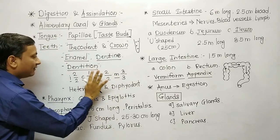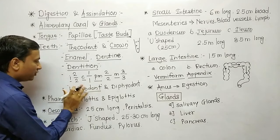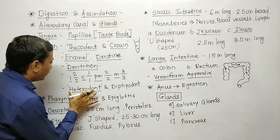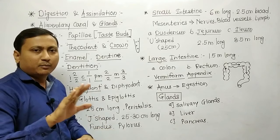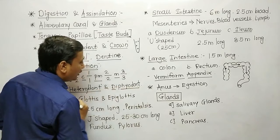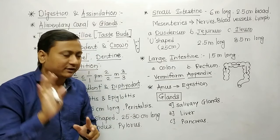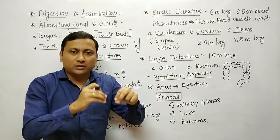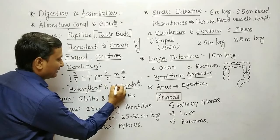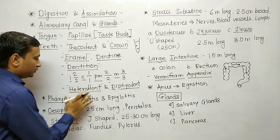The next point is heterodont. In our buccal cavity, different kinds of teeth are present; such teeth are known as heterodont, meaning different kinds. Because the structure of each type of tooth is different, the dentition is heterodont type. The next point is diphyodont. Every human being shows two sets of dentition in their life; such a term is known as diphyodont.